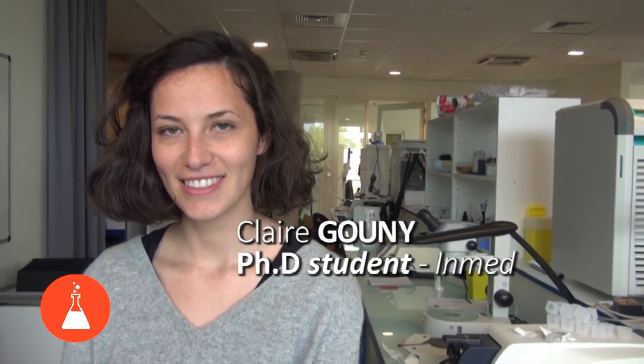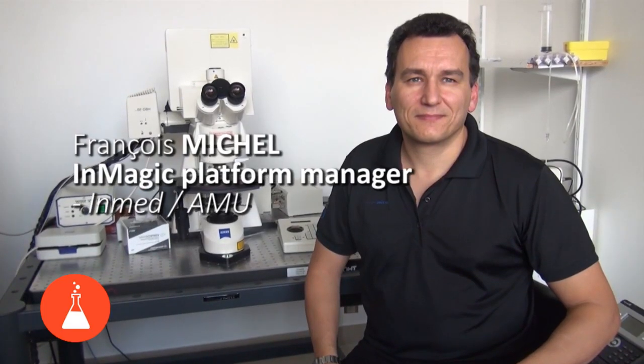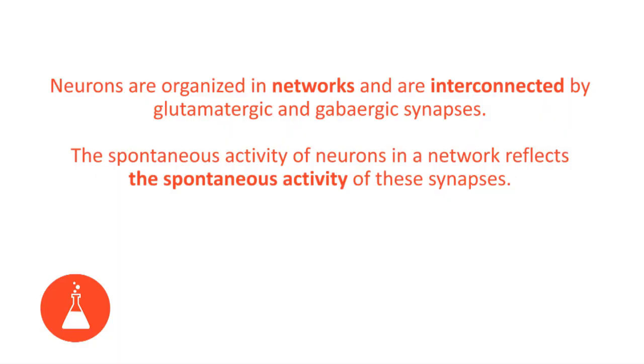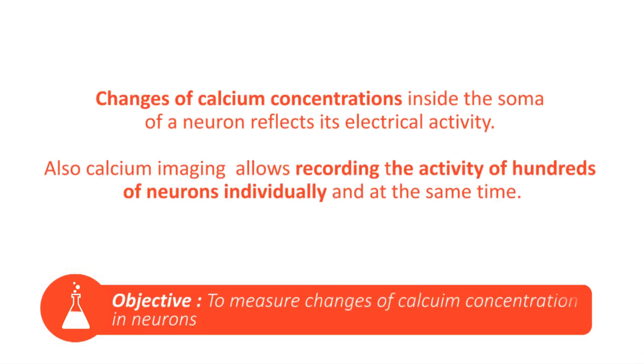Neurons are organized in networks and are interconnected by glutamatergic and GABAergic synapses. The spontaneous activity of neurons in a network reflects the spontaneous activity of these synapses. To visualize the activity of each neuron in a network, we can use calcium imaging.